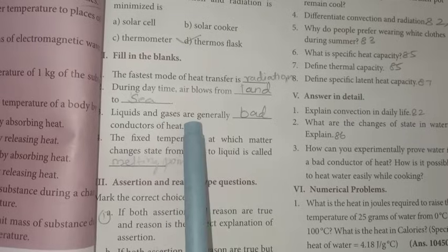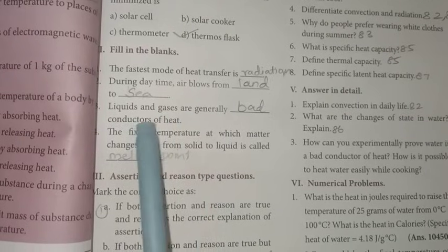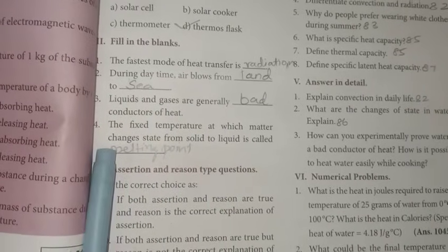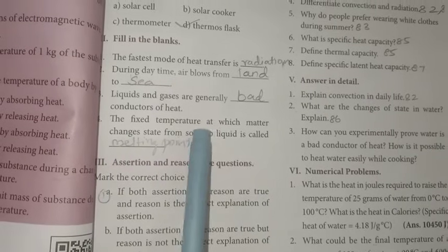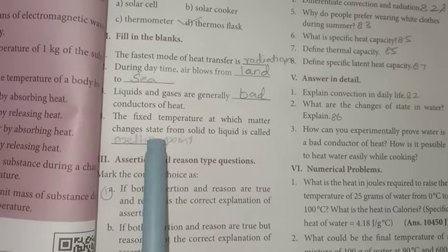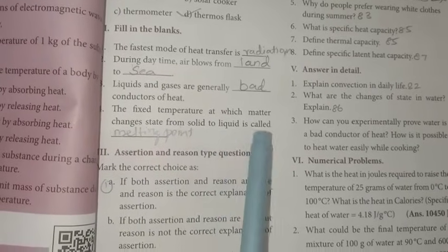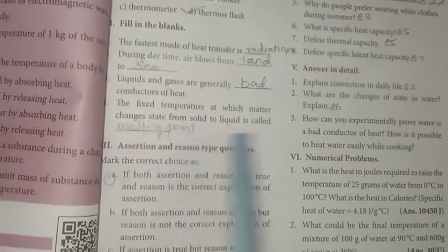Liquids and gases are generally bad conductors of heat. Then number 4: The fixed temperature at which matter changes state from solid to liquid is called melting point. Answer is melting point.